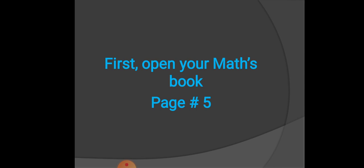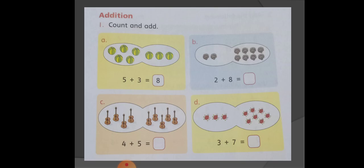Dear students, open your maths book page number five. We will count and then add these objects. We will count them in boxes. There are total eight melons. And the answer is already written.